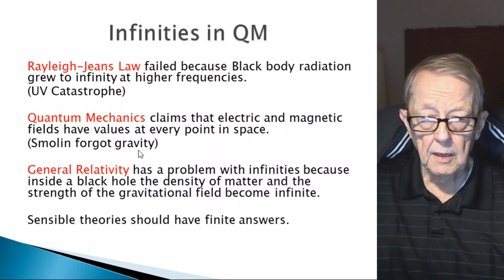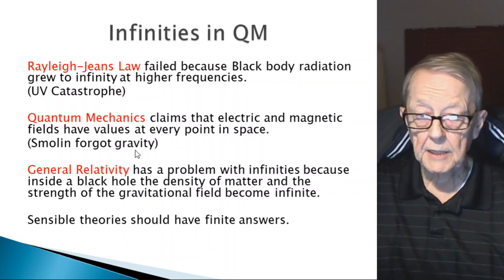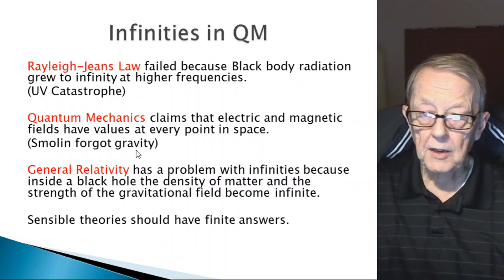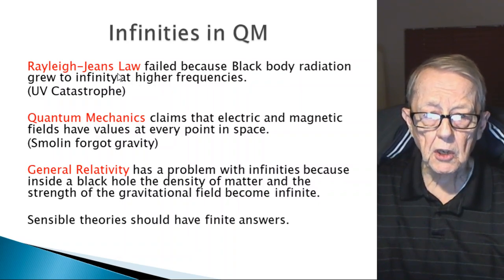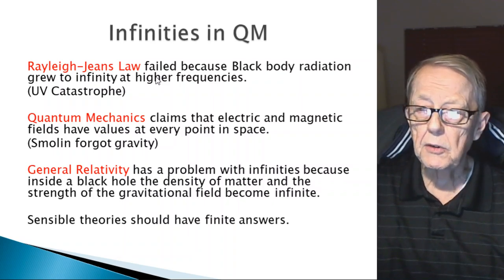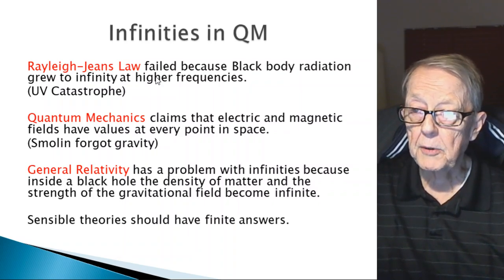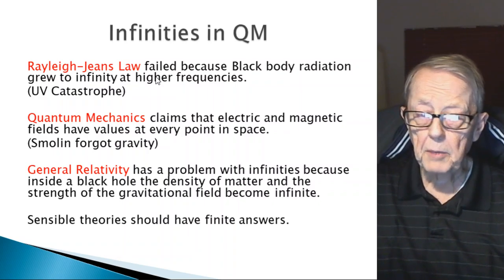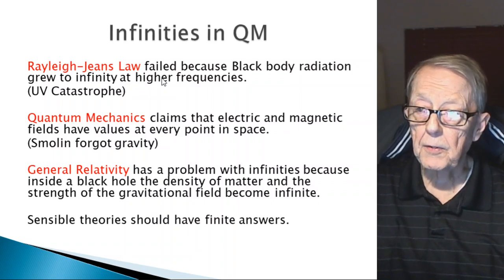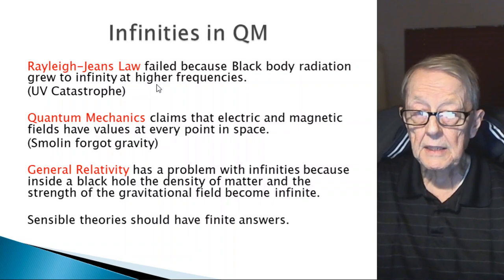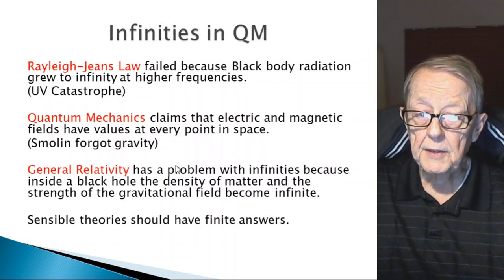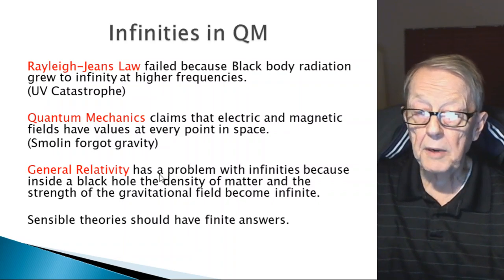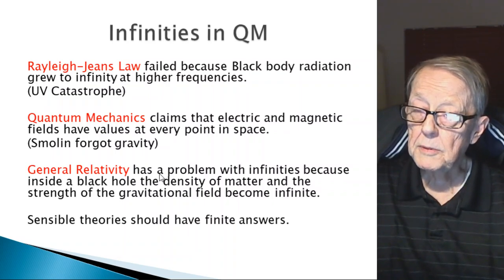Quantum mechanics doesn't clearly include gravity. There's the Rayleigh-Jeans law, which failed because black body radiation grew to infinity at higher frequencies. It was the first attempt to model the measured spectral energy coming out of a black body — it did well at low frequencies but tended to infinity at higher frequencies, which is a problem. General relativity also has a problem with infinities: inside a black hole, the density of matter and the strength of the gravitational field become infinite. These infinities should be corrected.